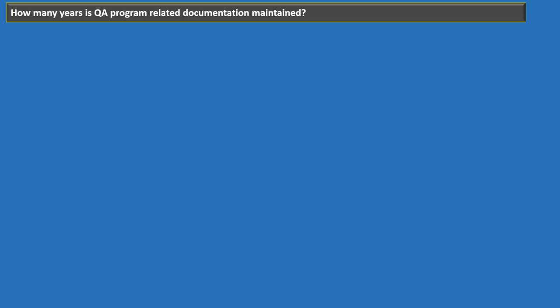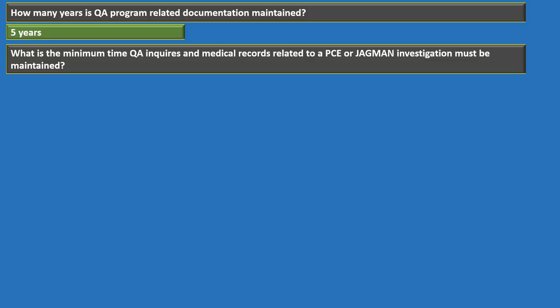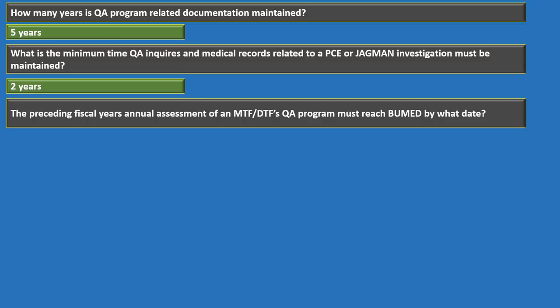Quality assurance program-related documentation is maintained for five years. Quality assurance inquiries and medical records related to potentially compensable events or JAG investigations are kept for a minimum of two years. The preceding fiscal year's annual assessment of the MTF's quality assurance program must reach BUMED by the 15th of January every year.